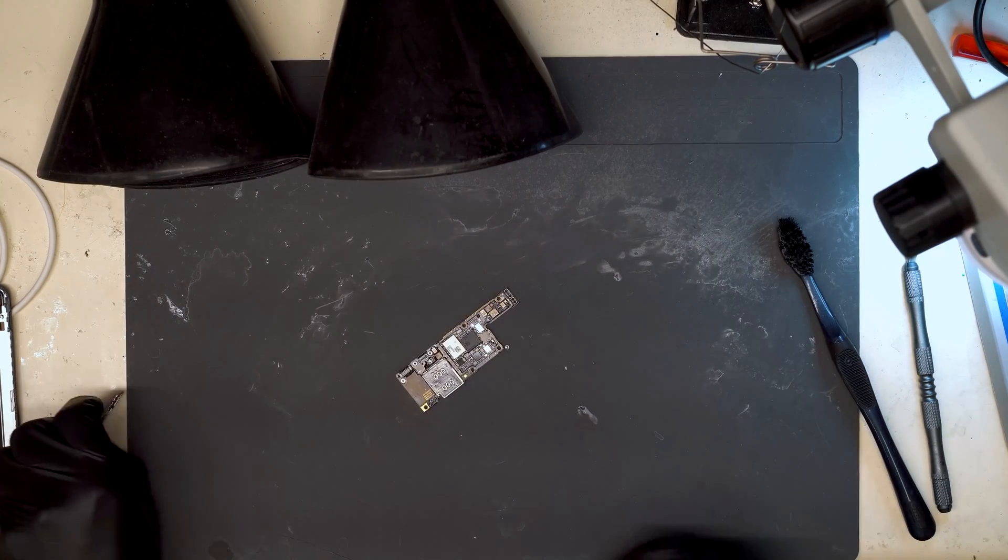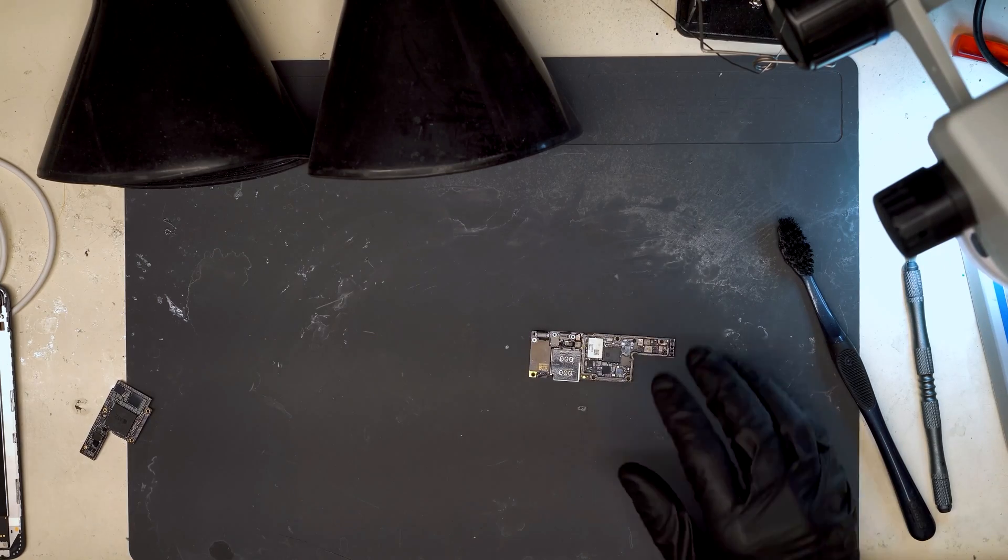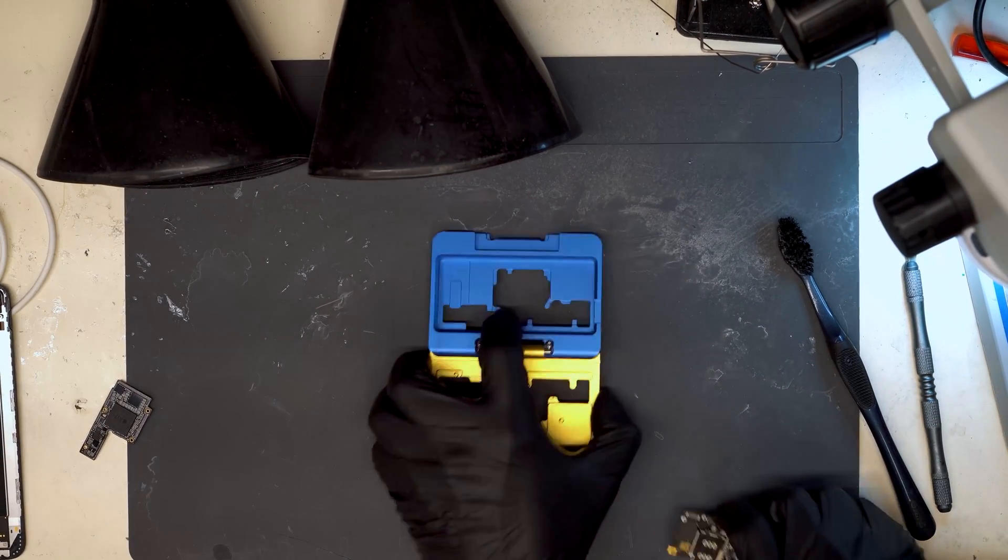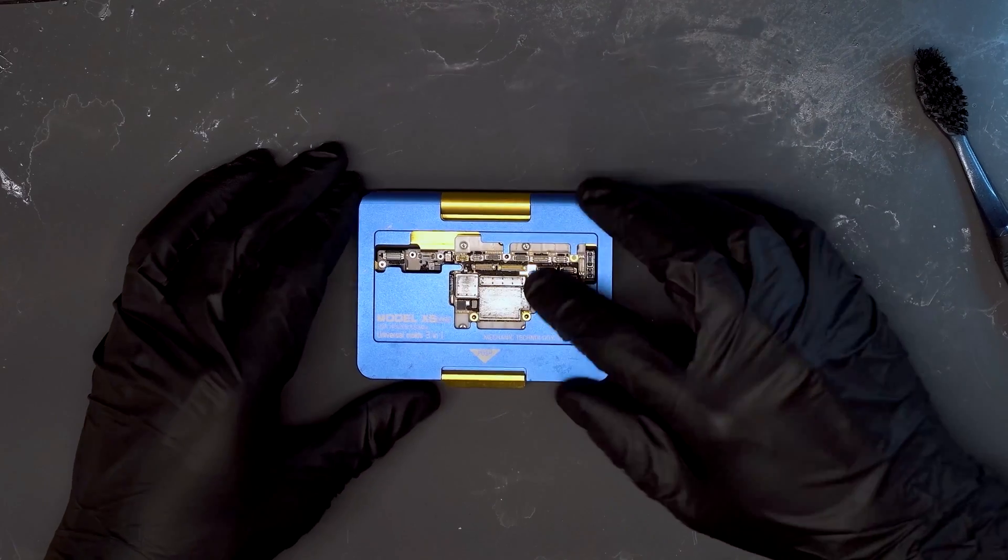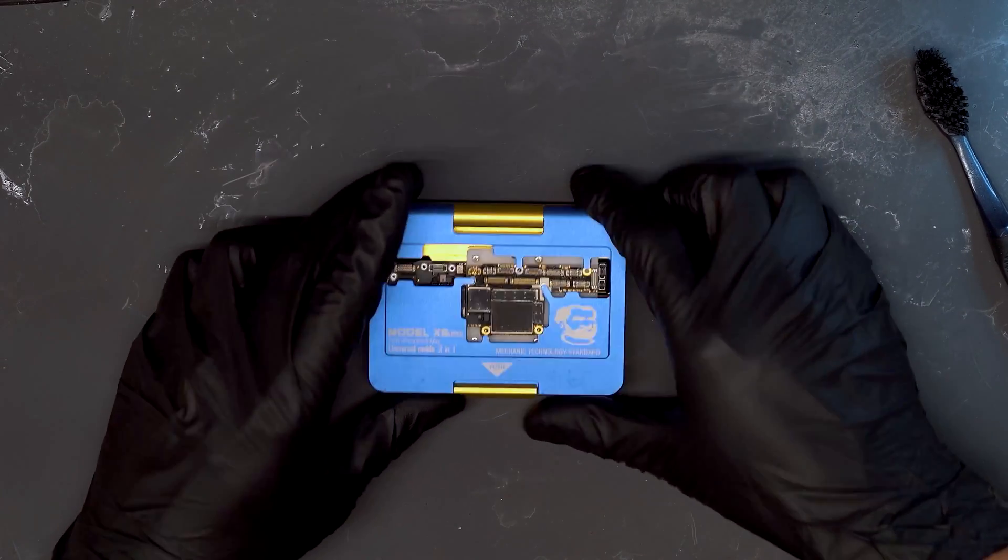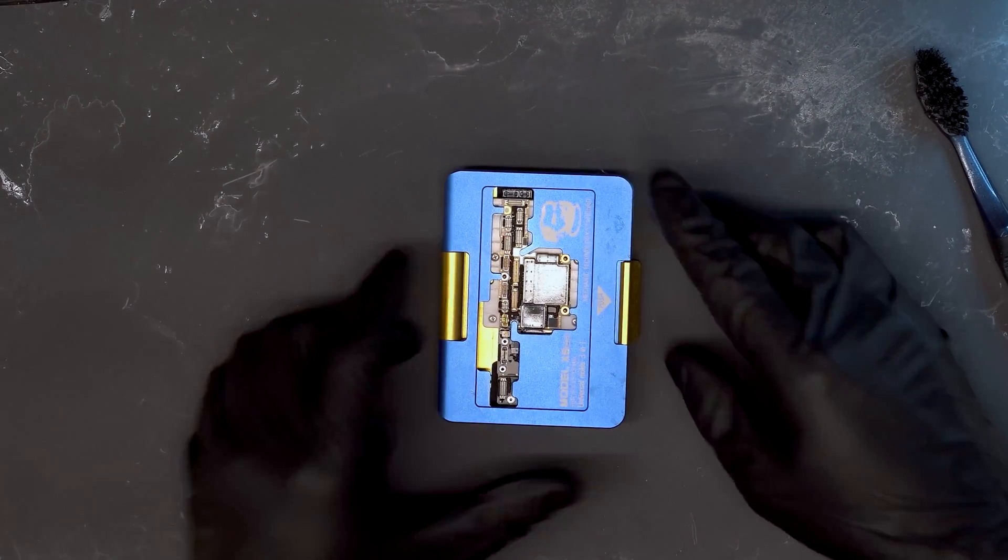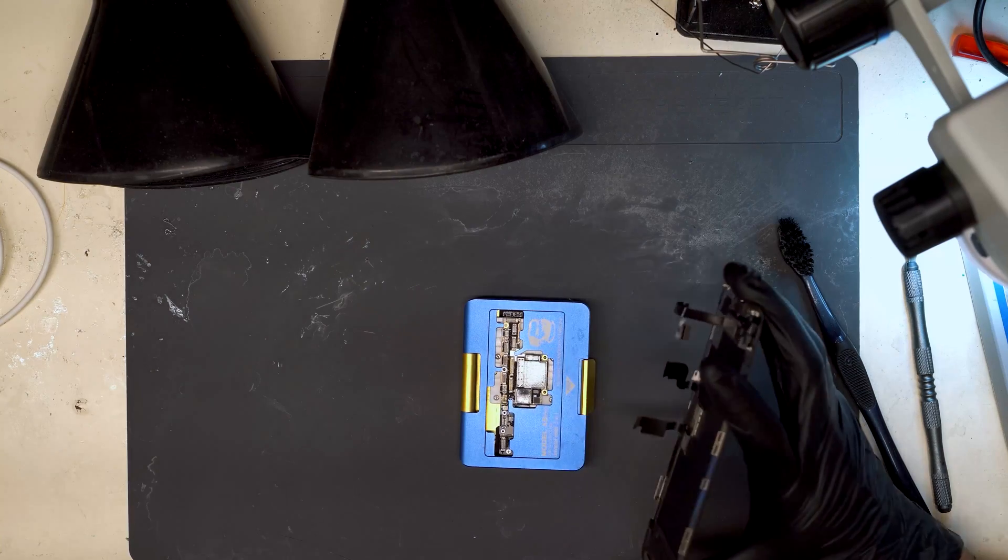All right, so now that we've removed the short, grab our testing jig and see if the phone is working. We won't be able to test the touch but we'll make sure the phone boots up and gets to the passcode screen, then we know that the repair was successful.